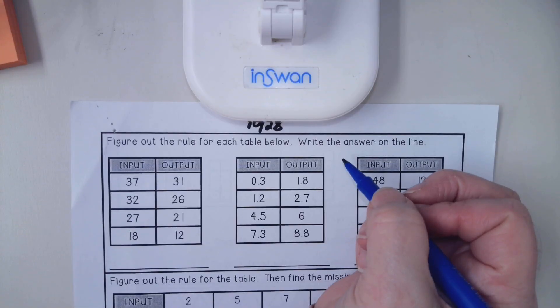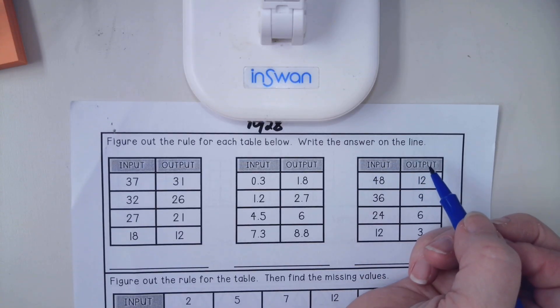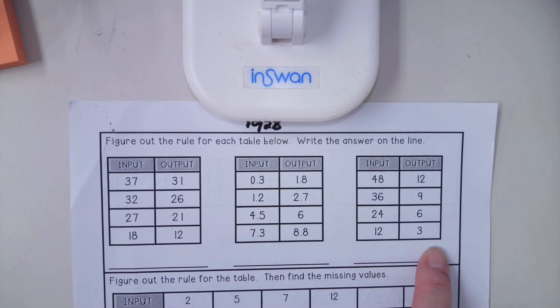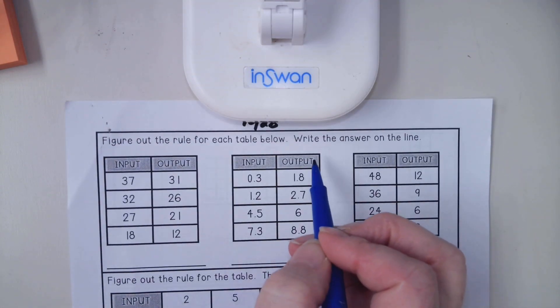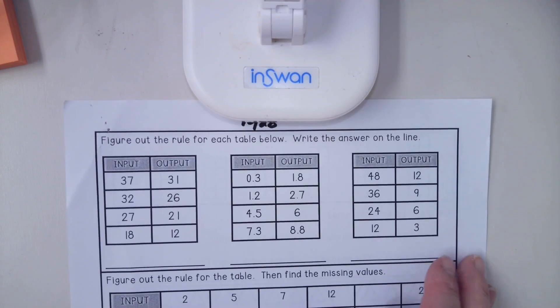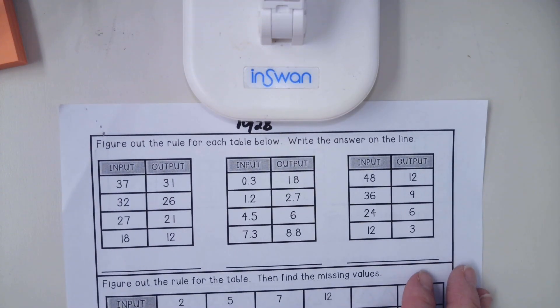It says figure out the rule for each table below, write the answer on the line. So you're going to write your answer right down here on the line. We have to figure out what the rule is. I'm picking this one here in the middle because it's working with decimals. I want you to know you can work on this problem just like you would work on a number without decimals.